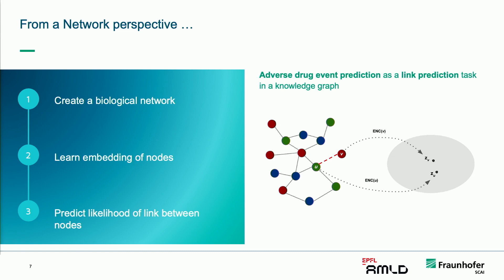Taking a network perspective on adverse event prediction, we can see it as a link prediction task in a knowledge graph. Accomplishing this task requires three steps: first, create a biomedical knowledge graph representing the space we engage with; second, learn embeddings of the nodes such that similar nodes are close in the embedding space; and third, predict the likelihood of an edge or link between entities in the knowledge graph.